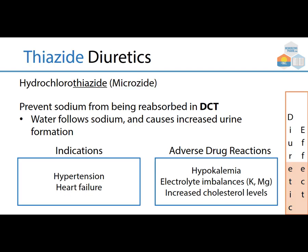Thiazide diuretics — hydrochlorothiazide, brand Microzide — prevent sodium from being resorbed in the distal convoluted tubule. Water follows sodium and causes increased urine formation. Indications include hypertension and heart failure. Adverse drug reactions are similar to furosemide: hypokalemia, potassium and magnesium loss, and in some cases increased cholesterol levels.